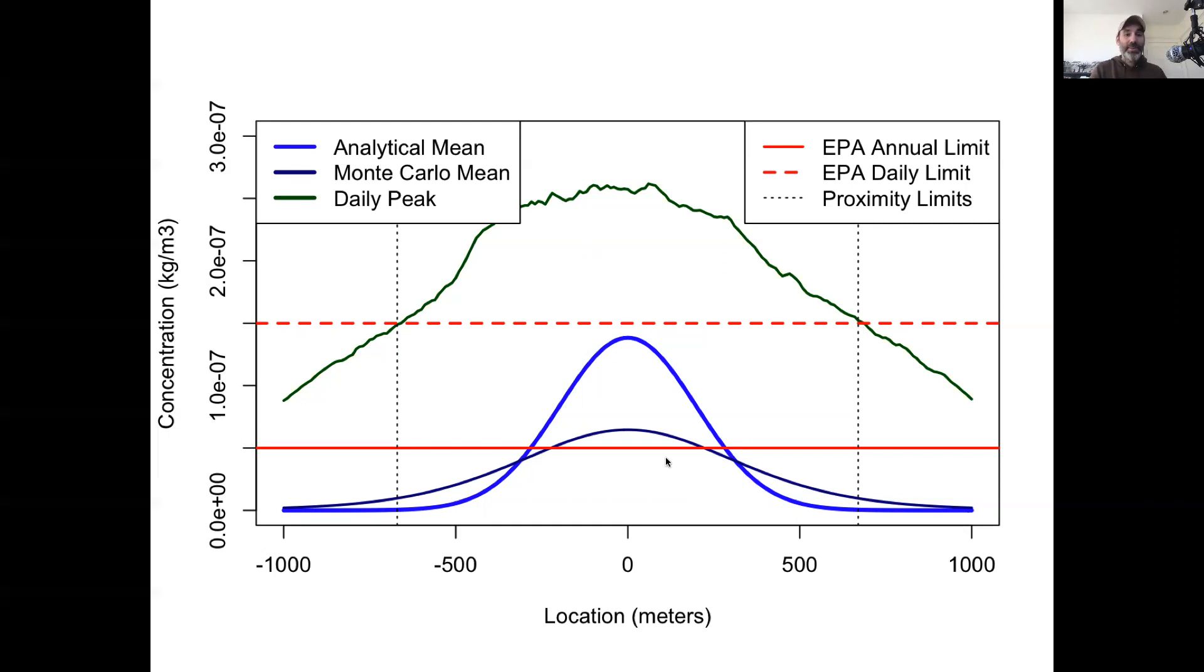And so here we see that it's that daily peak exposure, that day of the year where you get the perfect storm of wind blowing right at the school instead of down perpendicular to Main Street, and the stability classes and wind directions and wind speeds all add up to kind of get that peak pointed right at the school.